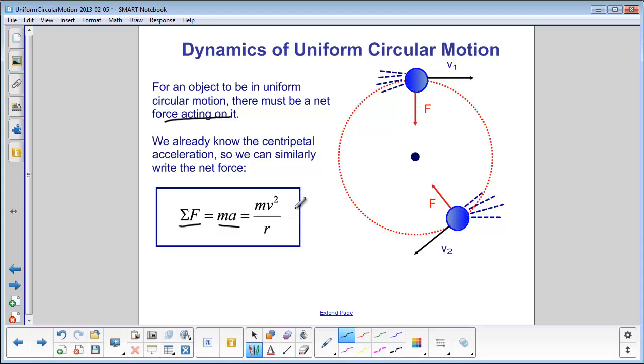a can be replaced with v squared over r. So, centripetal force would be m v squared over r.